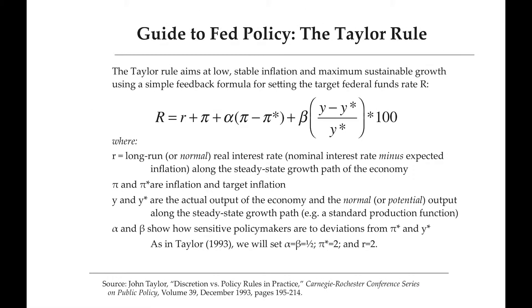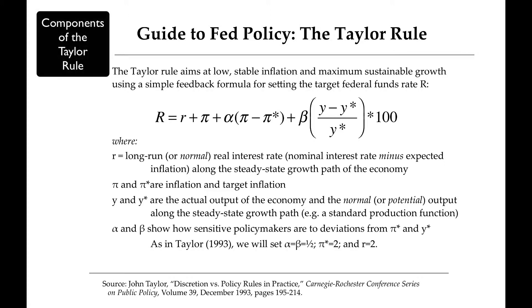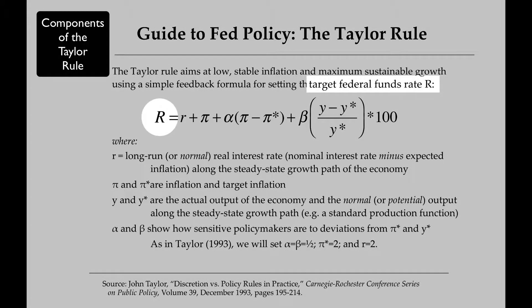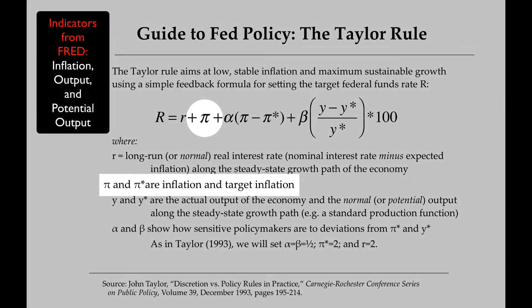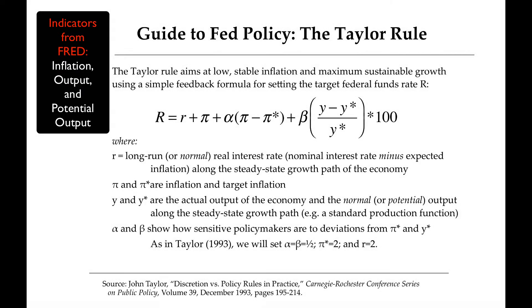Let's begin by focusing on the components of the Taylor Rule. Capital R is the target federal funds rate. Pi is the inflation rate measured by the Personal Consumption Expenditures Index, found in FRED.